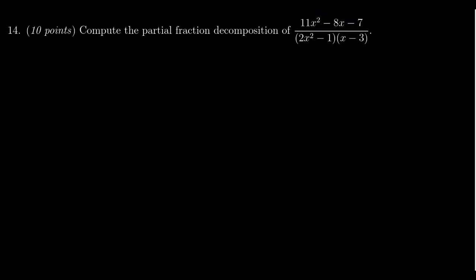11x squared minus 8x minus 7 is the numerator, and the denominator is factored as 2x squared minus 1 times x minus 3. And so given this rational function,